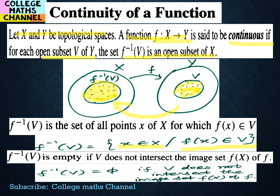In topological spaces, all of them are open sets. That's why we state the condition in terms of open sets. So: let X and Y be topological spaces; a function f from X to Y is said to be continuous if for each open subset V of Y, the set f-inverse of V is an open subset of X.